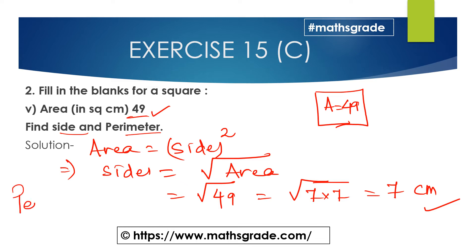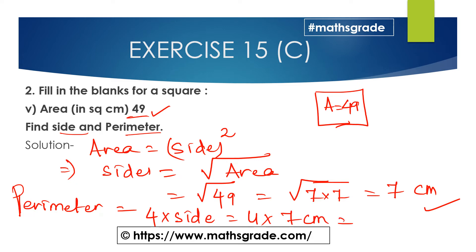Now the perimeter of the square. The formula is 4 multiplied by the length of the side. The side is 7 centimeters, so 4 × 7 = 28 centimeters. So the side of the square is 7 centimeters and the perimeter of the square is 28 centimeters.